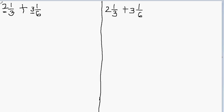Which one is our whole part? 2 and 3 — these are the two whole numbers. First of all, we'll add the whole numbers. So 2 plus 3 is equal to 5.